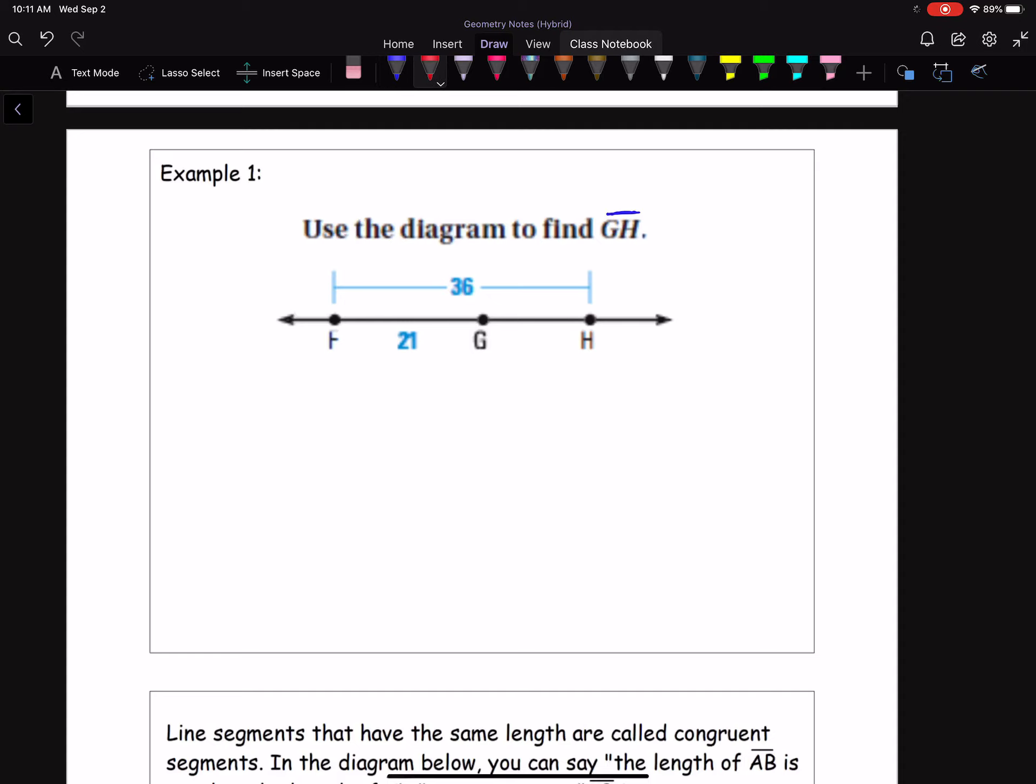So if I use the Segment Addition Postulate, I know that FG, this segment here, plus GH, which I'm trying to find, if I add those two together, I'm going to get the entire segment, which it tells me right above here is FH.